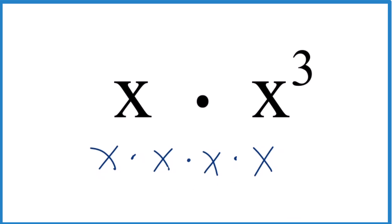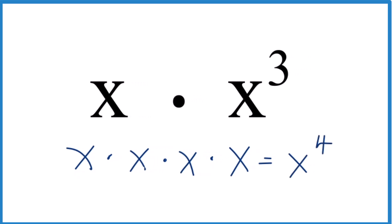So x times the third, one, two, three, four. That equals x to the fourth. That's one way you could do it.